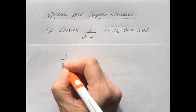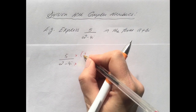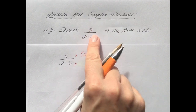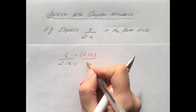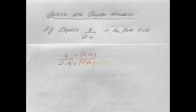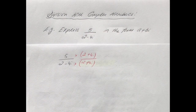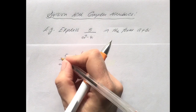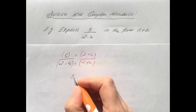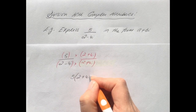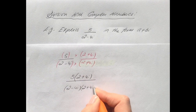We have 5 over 2 minus 4i. We multiply top and bottom by 2 plus 4i because that keeps the fraction equivalent — as long as you do the same thing to the top and bottom, the fraction stays equivalent. So on the top we have 5 times 2 plus 4i, and on the bottom we have 2 minus 4i times 2 plus 4i.